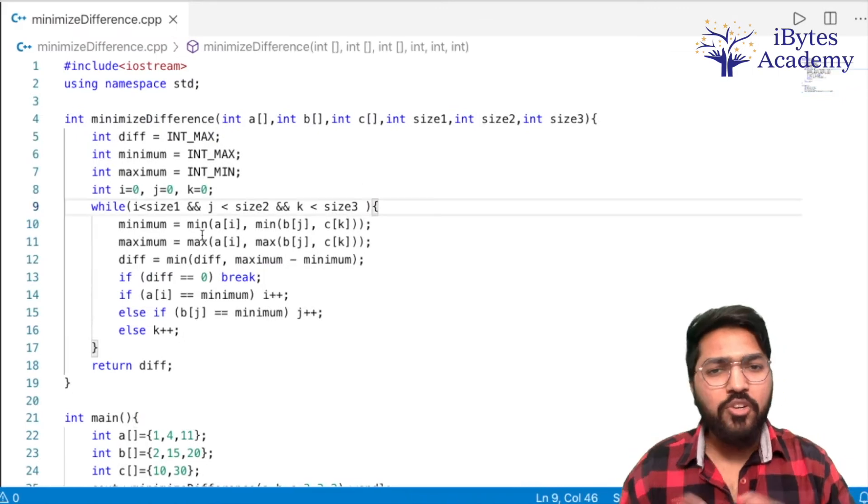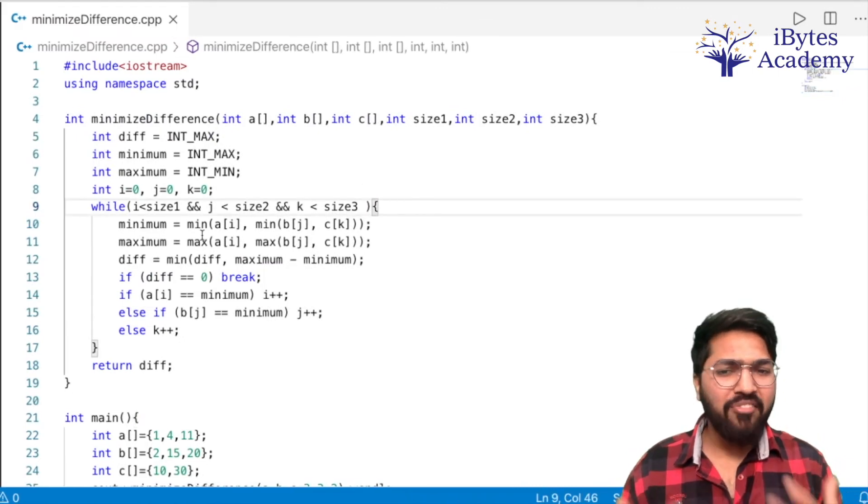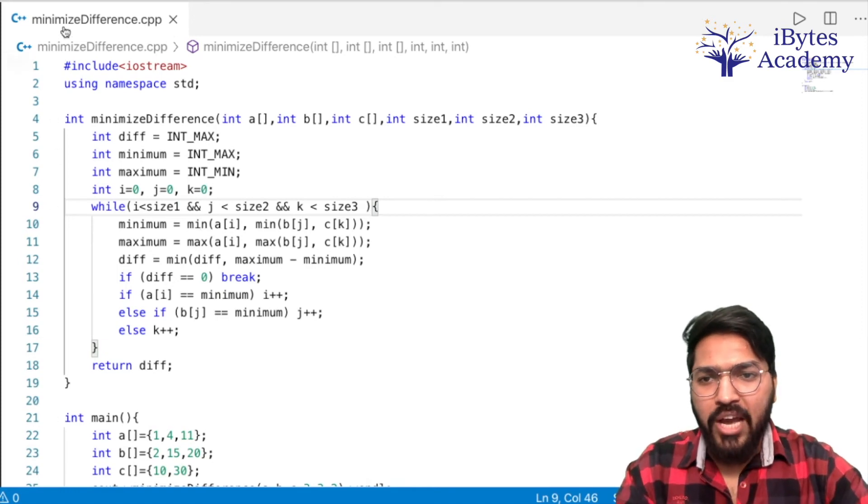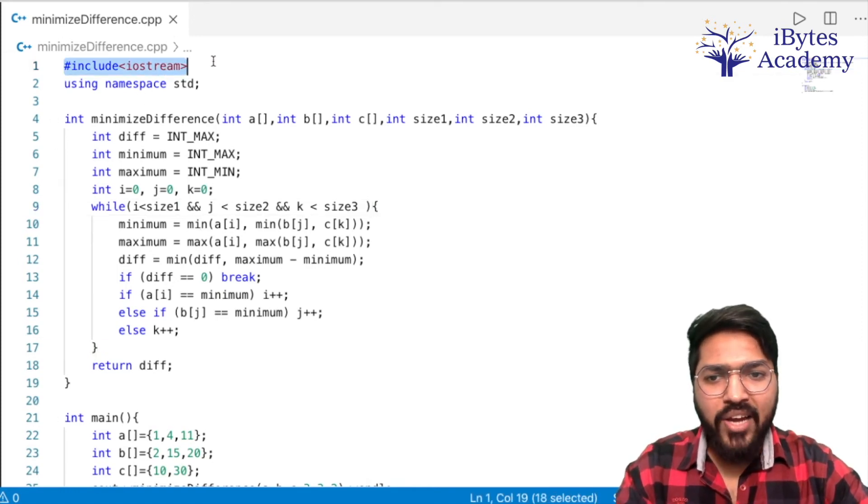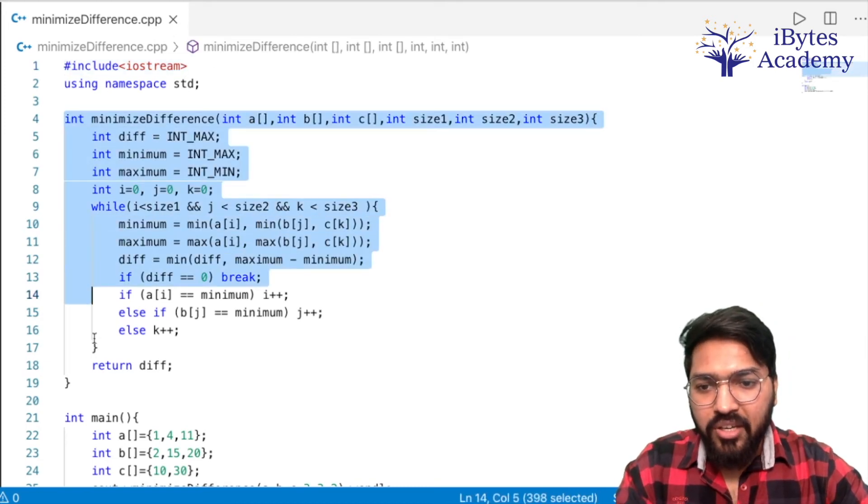Normally I code it alongside, but since it's a fairly simple problem, I think showing the code will also work fine. So I have created this CPP file minimumDifference.cpp. This is my header file include iostream, then using namespace std. Then this is my function.